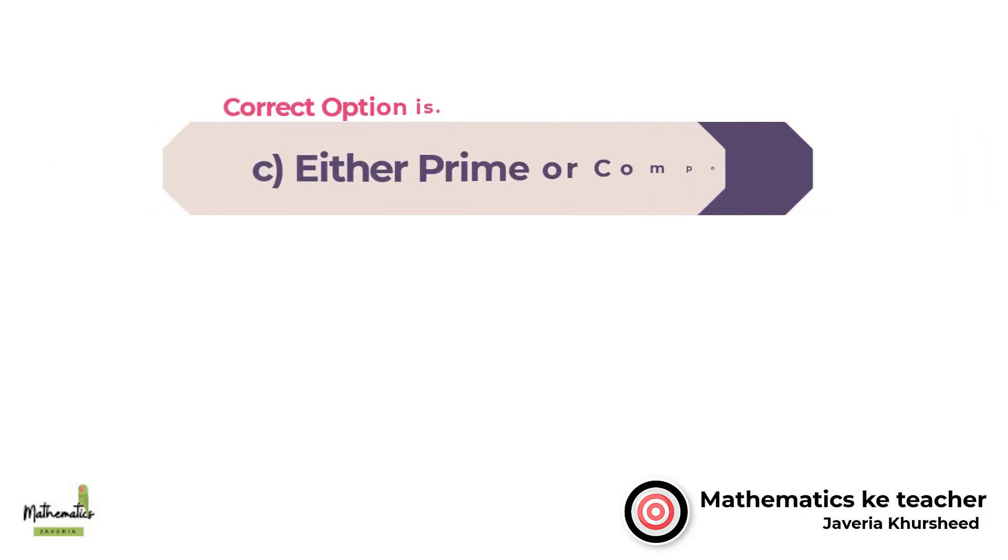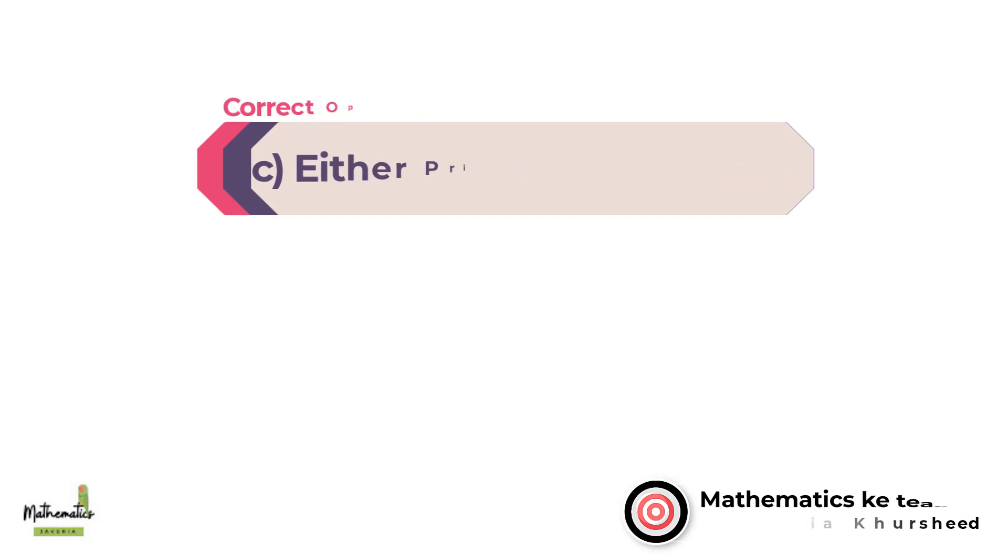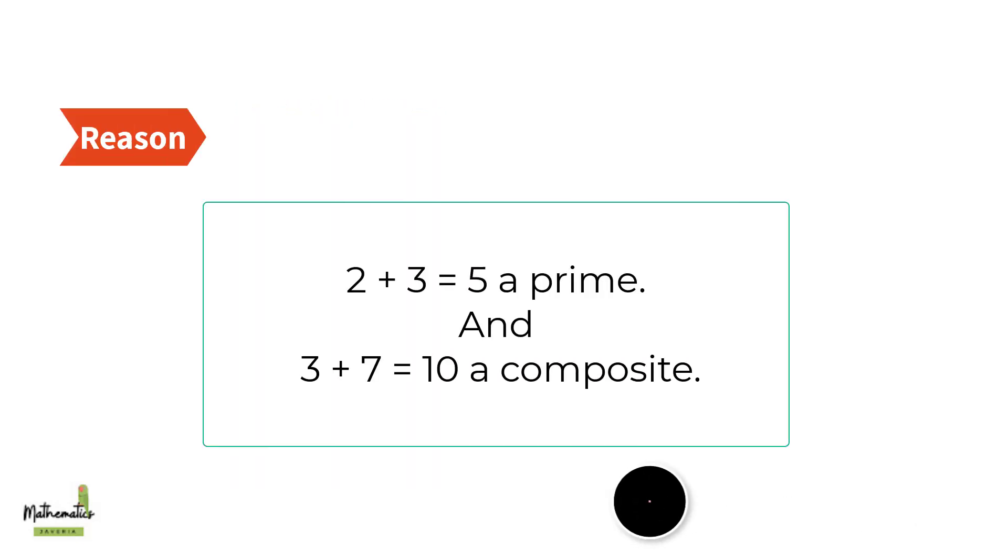Correct option is C, either prime or composite. Since 2 plus 3 equals 5, a prime, and 3 plus 7 equals 10, a composite.